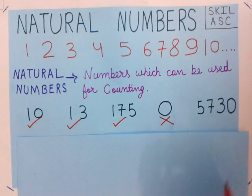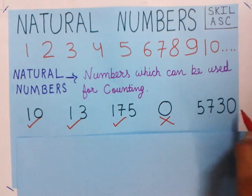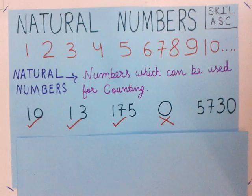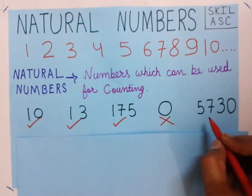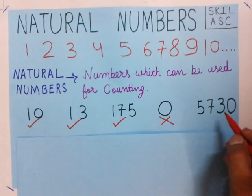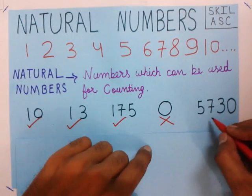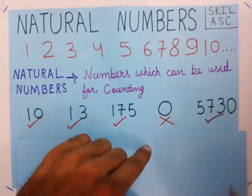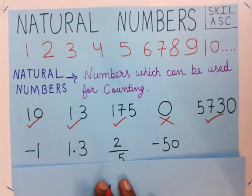Now consider 5730. Of course this number comes while counting — this number is used while counting — so 5730 is a natural number.